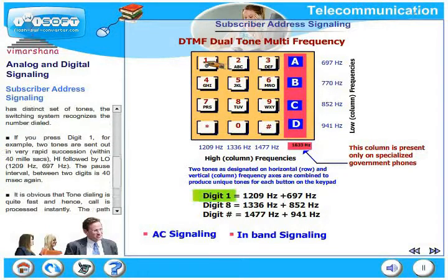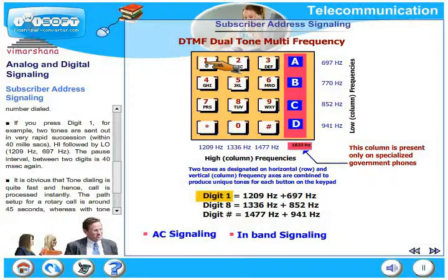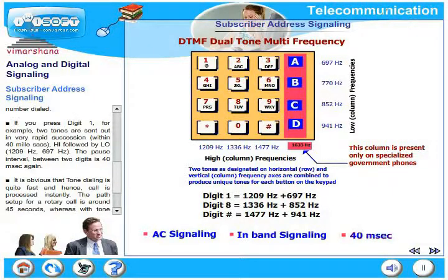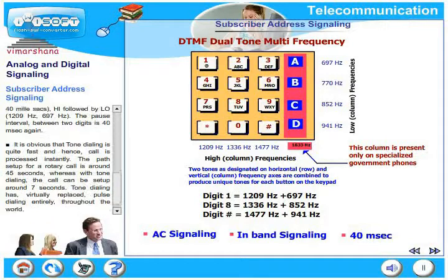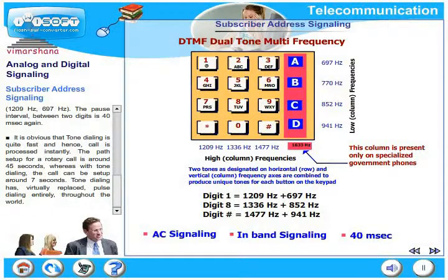If you press digit 1, two tones are sent within 40 milliseconds: 1209 hertz and 697 hertz. The pause interval between these two tones is again 40 milliseconds — one tone for 40 milliseconds, a pause for 40 milliseconds, and the second tone for another 40 milliseconds. It is obvious that tone dialing is very fast and hence the call is processed quickly.